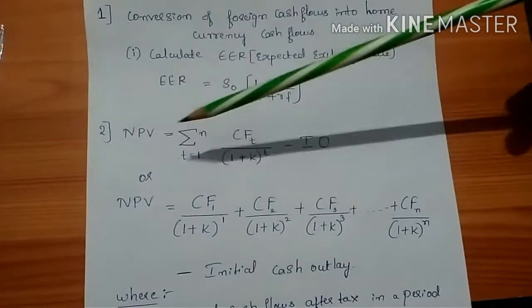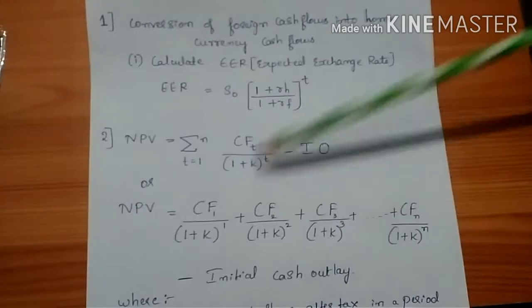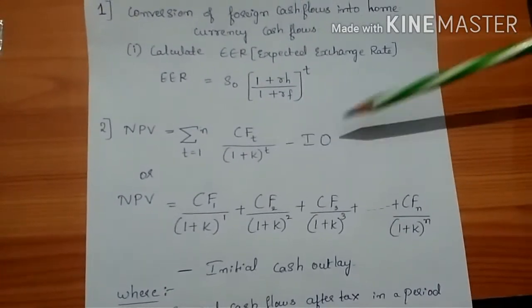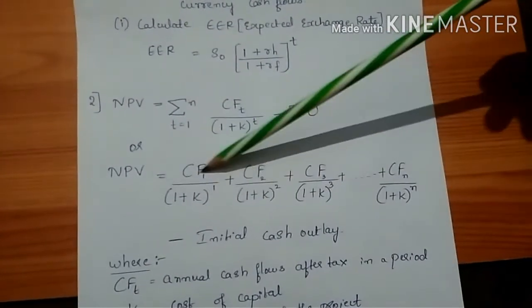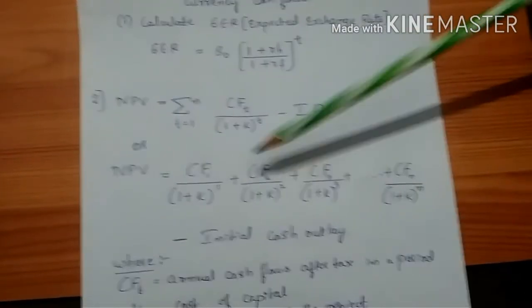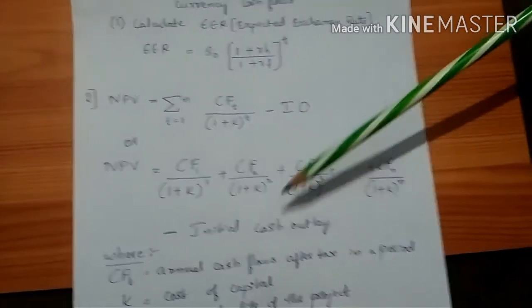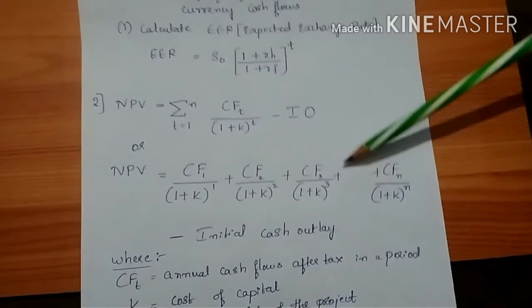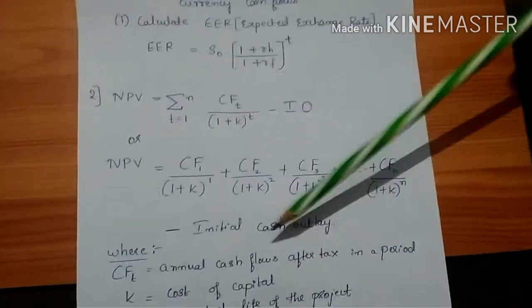Now coming to the second step, calculation of NPV. The formula is sigma, n to the base T equals 1, CFT by (1 plus K) to the power T minus I0. Or you can use this formula: NPV equals CF1 by (1 plus K) to the power 1, plus CF2 by (1 plus K) to the power 2, plus CF3 by (1 plus K) to the power 3, and so on for however many years are given in the question, minus initial cash outlay.